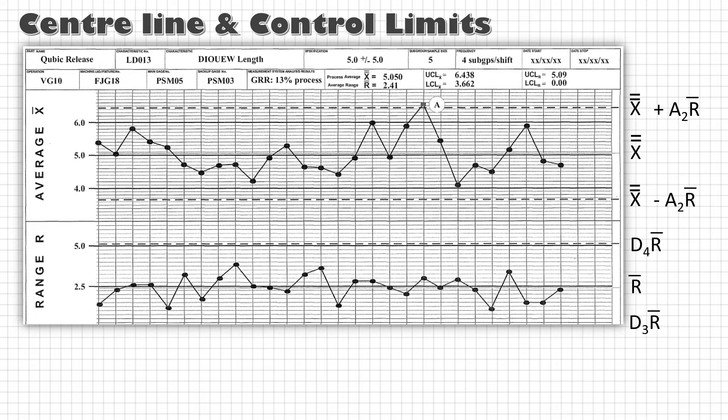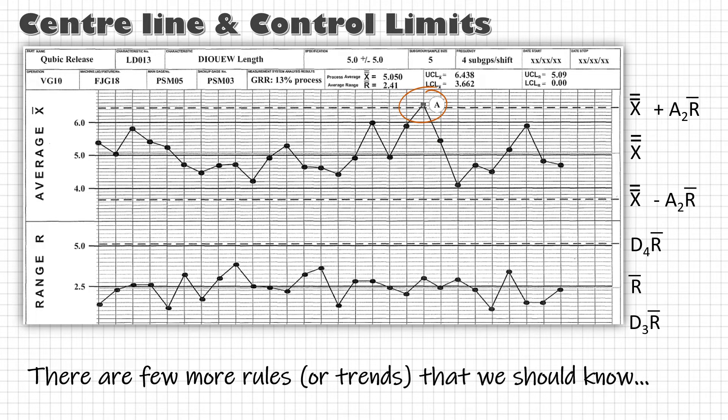With these control limits we begin to plot x bar and range and if any point goes beyond control limit the occurrence of special cause is likely. In addition to this there are few more rules which points out the presence of special cause.